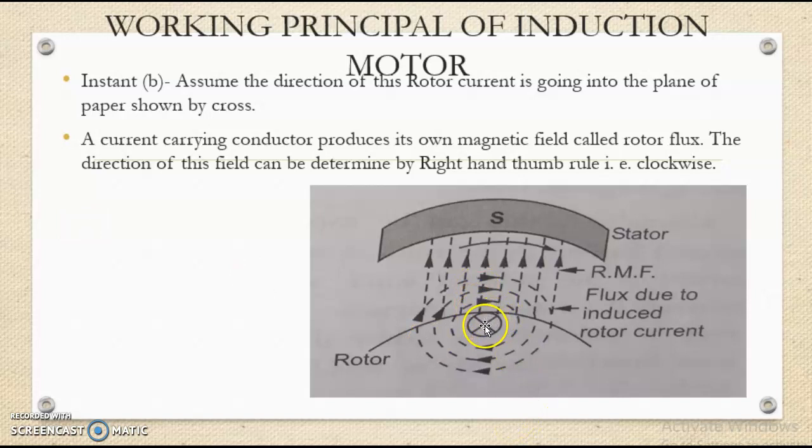Suppose the direction of this current is going into the plane of paper. We are showing it with a cross symbol as shown in this figure.